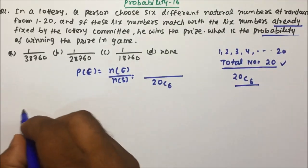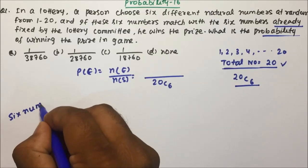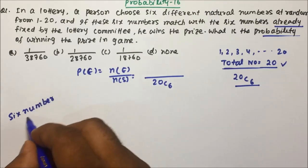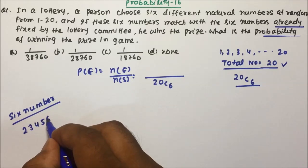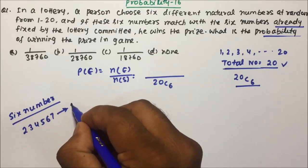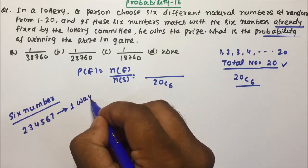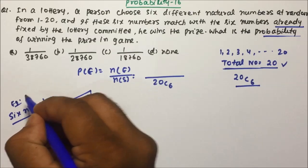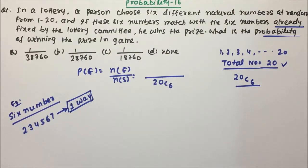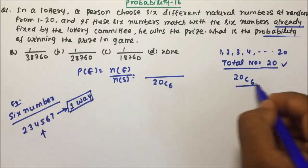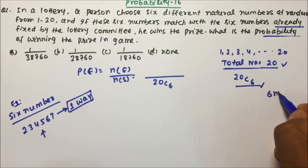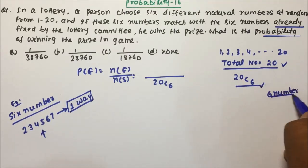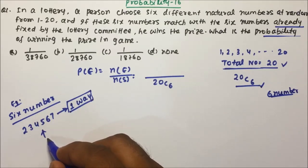The six numbers fixed by the committee are, suppose, 2, 3, 4, 5, 6, 7 — I am just giving an example. So suppose a lottery committee has fixed the six numbers 2, 3, 4, 5, 6, 7. If you are selecting six numbers out of 1 to 20, and if your selection matches with these numbers, then only you will be able to win.